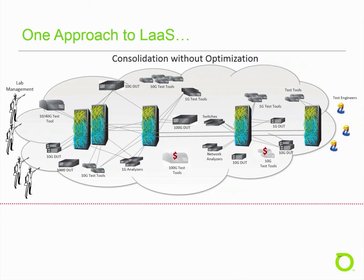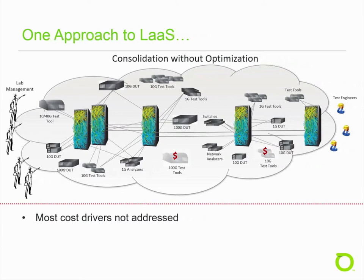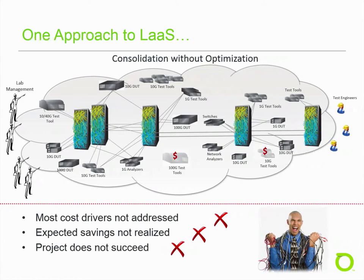Now that we've seen the drivers and key objectives for lab-as-a-service, let's look at one approach to implementing a service-oriented lab. This diagram represents a scenario where multiple labs were consolidated but not optimized. Equipment from multiple test labs was moved to a single location to form a larger lab, and a lab management team was tasked with implementing lab-as-a-service. Unfortunately, the inefficiencies of the single-use labs were also carried forward, thus making it very difficult to increase utilization, reduce time, or save money with the new approach. With this approach, cost drivers are not addressed, expected savings are not realized, and the project will not succeed. This approach is not recommended.